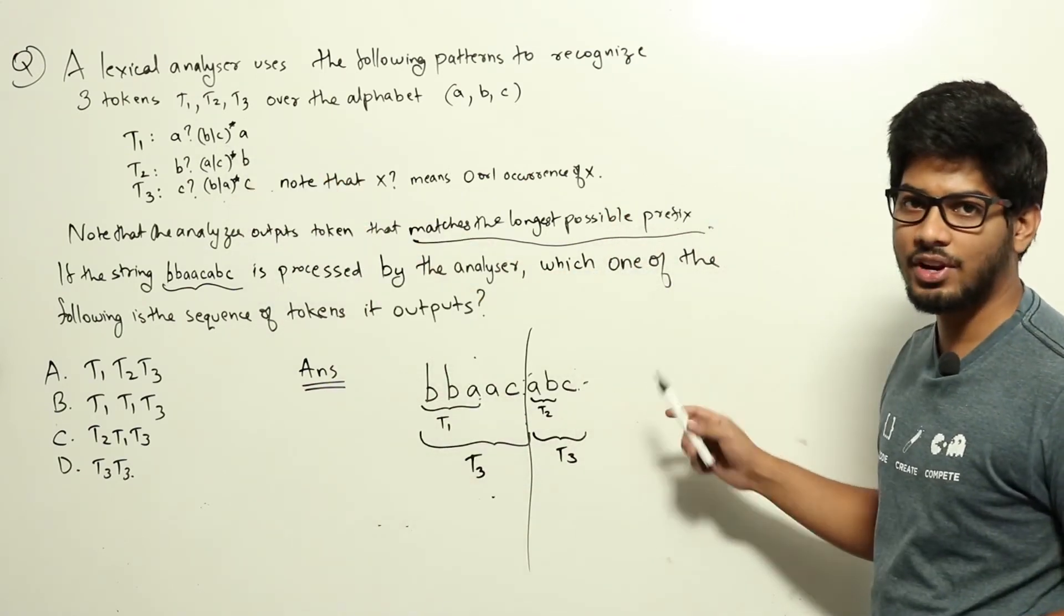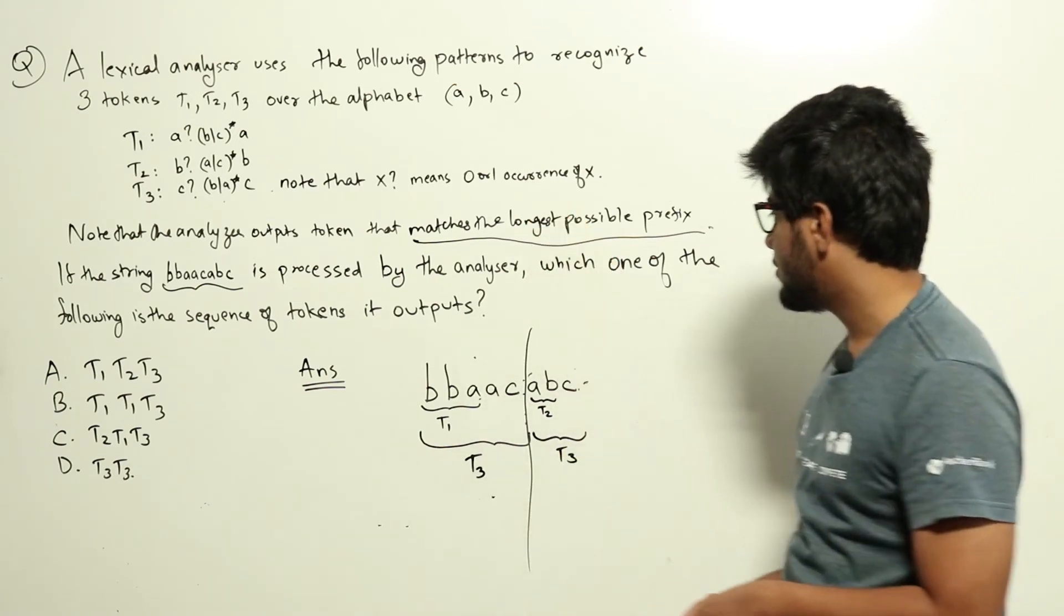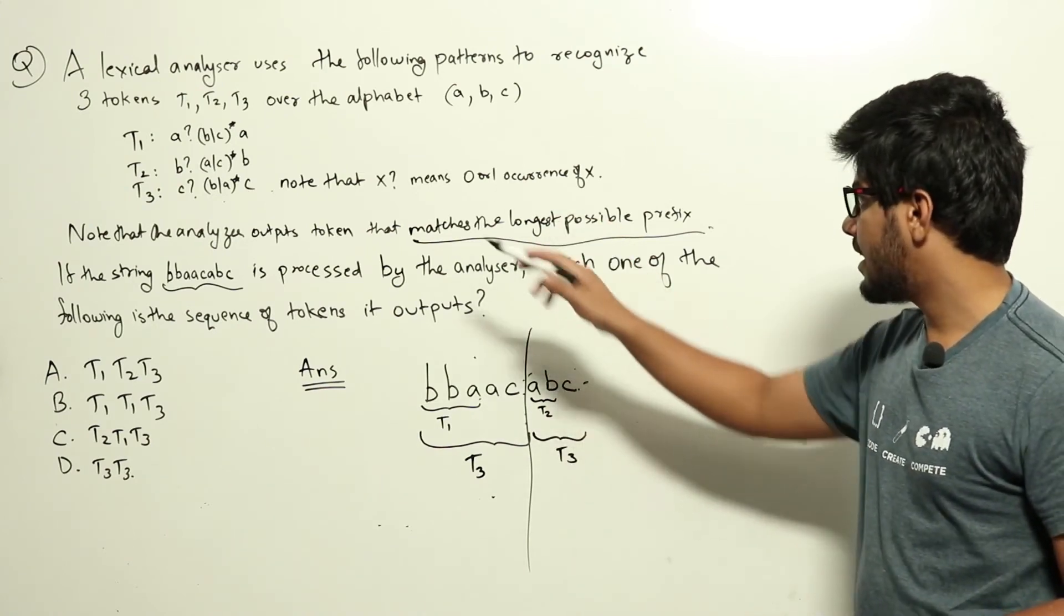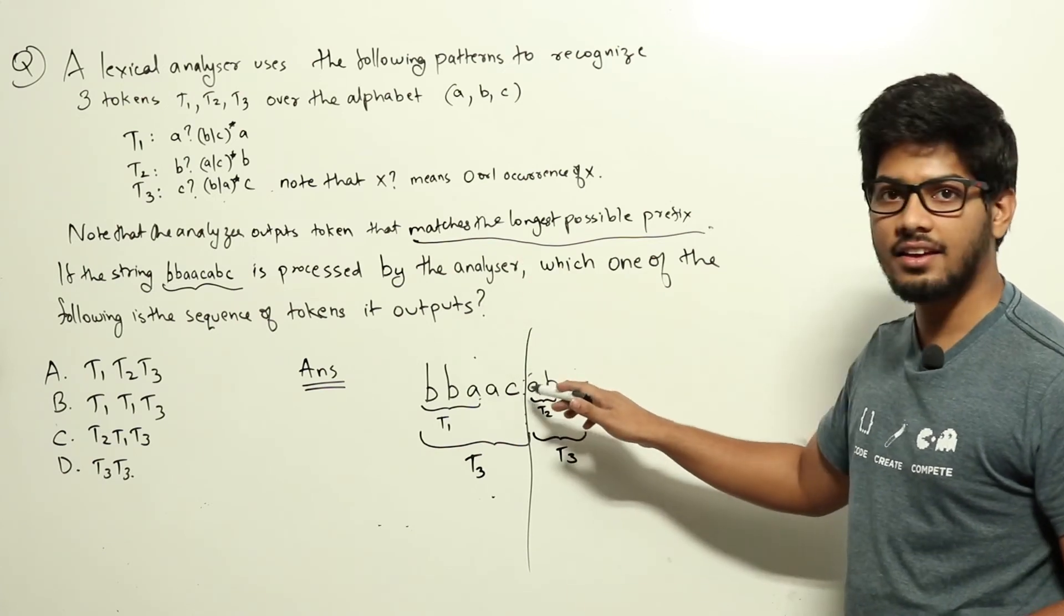Let's take a look at T2. Zero or one occurrence of b, there is no b, so that will be zero. Then a or c star, which there is one a here. The next one is b, so that needs to be stopped here, ending with b, that we can match here, so T2 will be matched up to here.